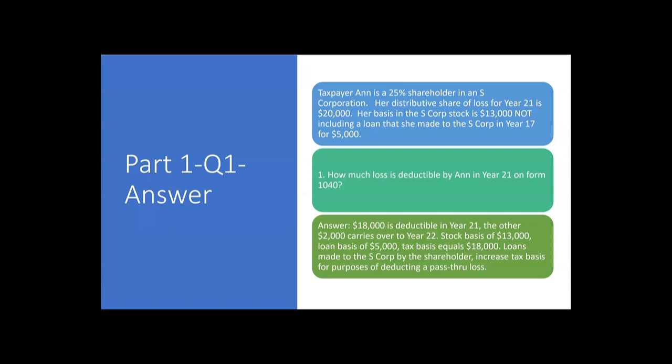Yes. $18,000 is deductible by Ann in year 21. The other $2,000 of the $20,000 total loss carries over to year 22 or until there's enough basis to absorb the loss. We took her stock basis of $13,000, added her debt basis of $5,000, and that equals her total tax basis of $18,000, because loans made to the S-Corp by the shareholder increase her total tax basis for the purposes of deducting a pass-through loss.